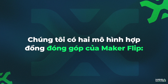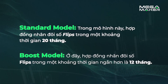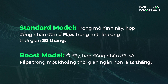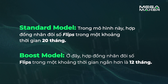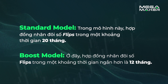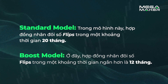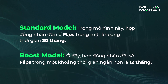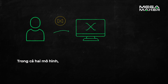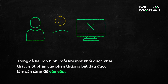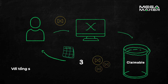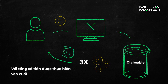In Mega Maker, we have two models of the Maker Flip contribution contract. The standard model multiplies the flips over a period of 20 months, while the boost model multiplies the flips over a shorter period of 12 months. In both models, with each mined block, a fraction of the reward starts to become available for claim, with the total amount being finalized at the end of the 20 or 12 months.